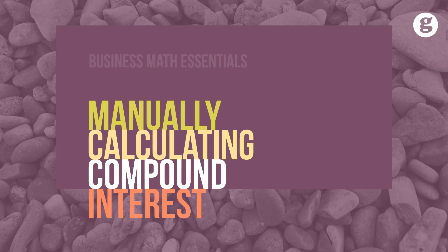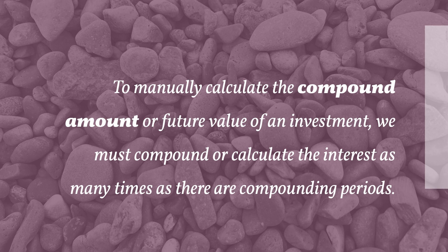Compounding divides the time of a loan or an investment into compounding periods, or simply periods. To manually calculate the compound amount or future value of an investment, we must compound or calculate the interest as many times as there are compounding periods at the interest rate per period.